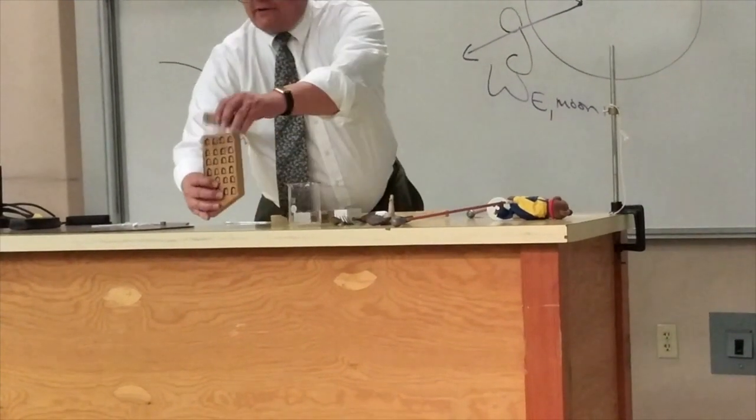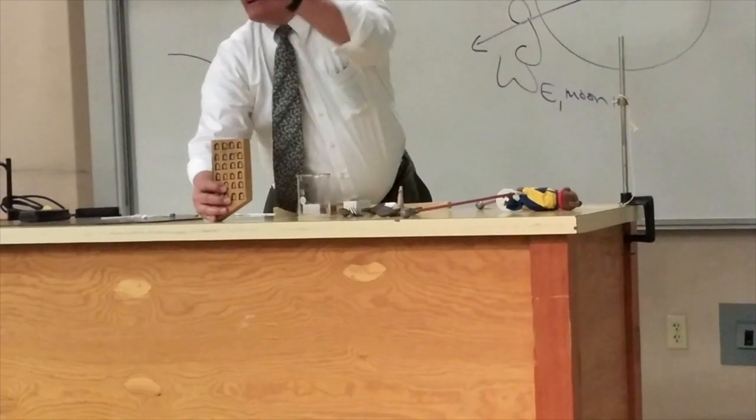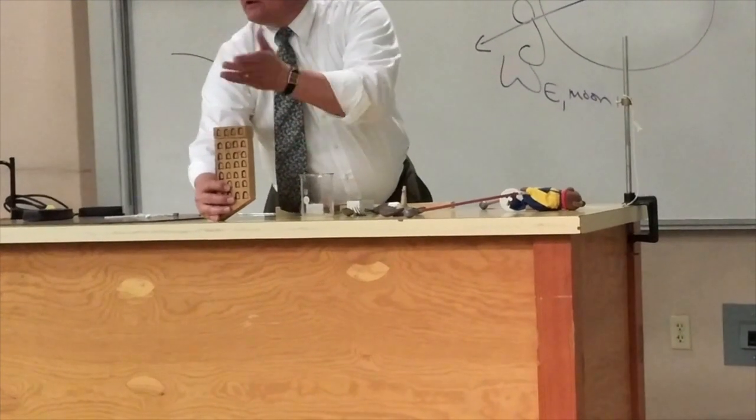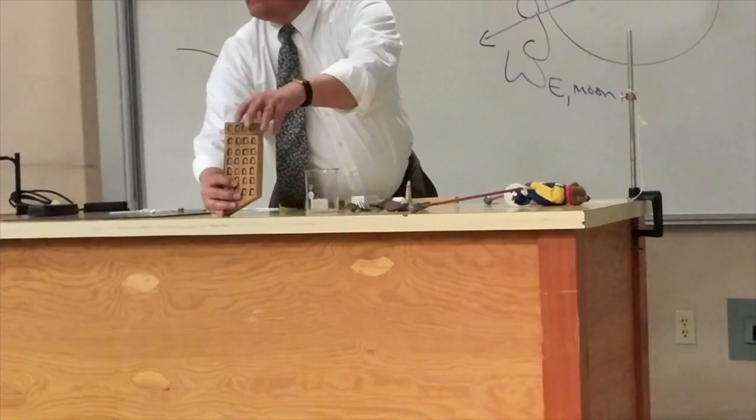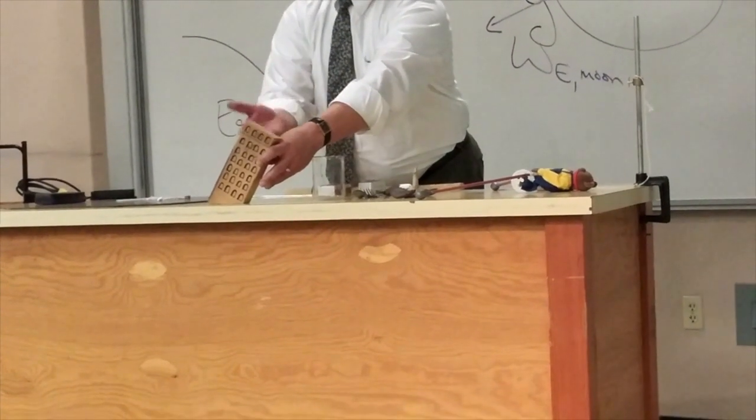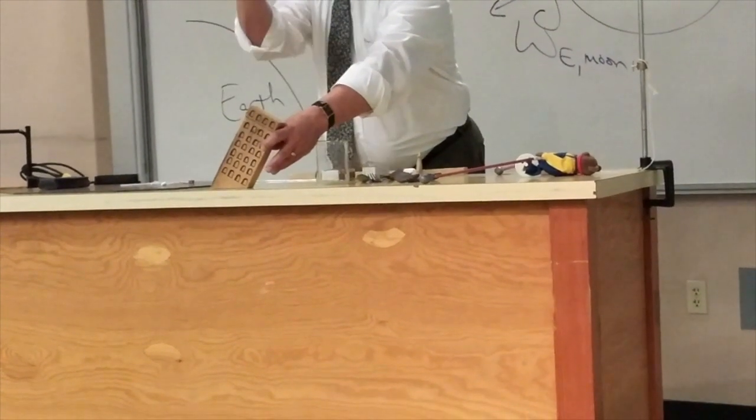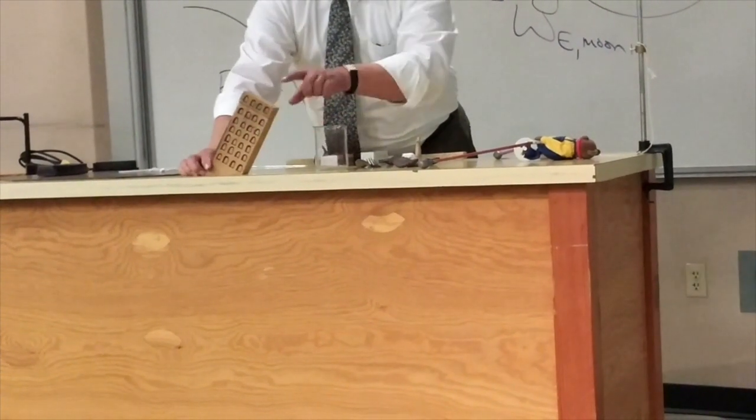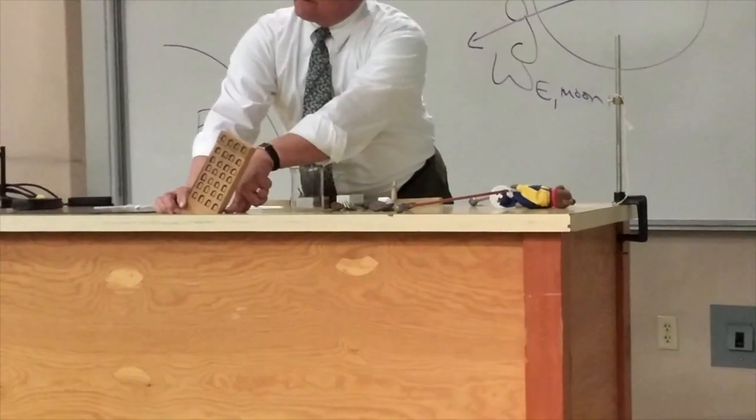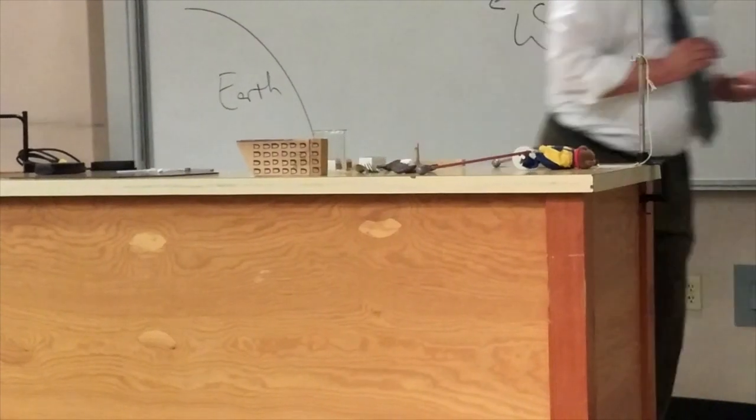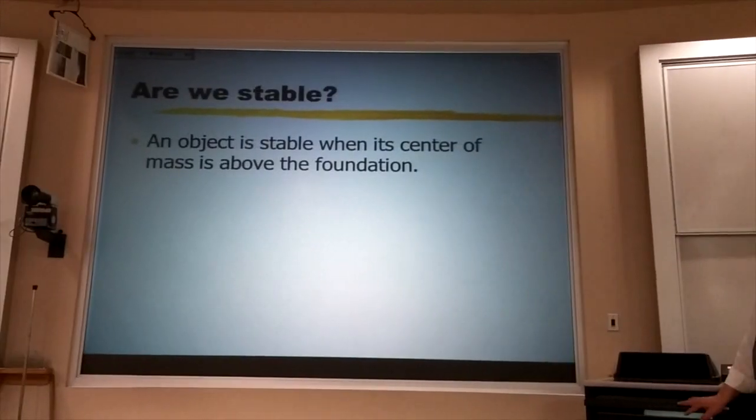Now, if you take a standard high-rise and you build it up one story, it doesn't fall over because you're moving the center of mass up, but you're not moving it over. But with the Leaning Tower, when you build up one more story, you're not only pulling the center of mass up, you're pulling it to the side. And here's the key idea: as soon as the center of mass gets beyond the foundation, it goes unstable. So that's the first big key idea.